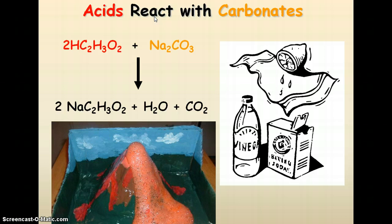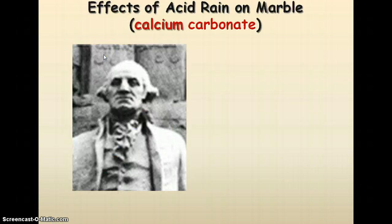When you have an acid that reacts with a carbonate, the carbonate is going to make carbon dioxide and water, and then you're going to get the metal that was on the carbonate attached to the anion of the acid, which in this case is the C2H3O2. That is the volcano reaction.